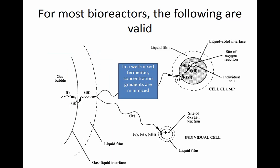Once oxygen has passed through this film layer, which acts like a boundary layer, and gets into the bulk liquid, the bulk liquid is pretty well mixed. If it is well mixed, concentration gradients are minimized, and the journey from outside the gas bubble's liquid film to the liquid film surrounding a cell or cell clump is not a significant impediment to mass transfer — mass transfer resistance in this region is small.